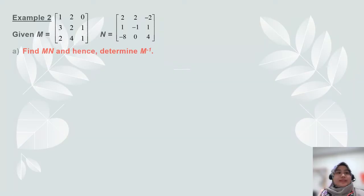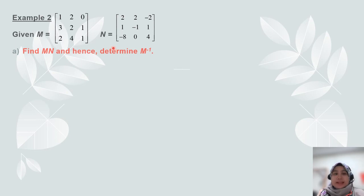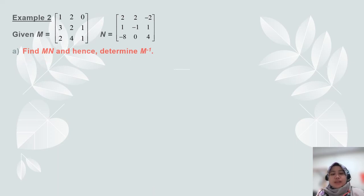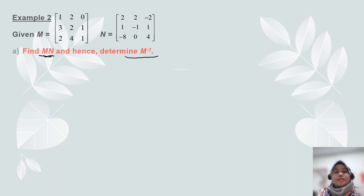Let's continue with Example 2. We are given matrix M with elements 1, 2, 0, 3, 2, 1, 2, 4, 1 and another matrix N with elements 2, 2, negative 2, 1, negative 1, 1, negative 8, 0, 4. We want to find MN and hence determine M inverse.